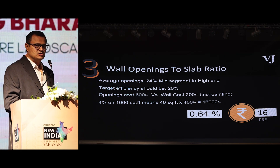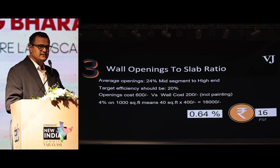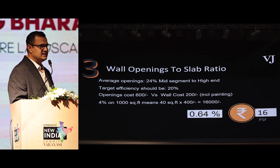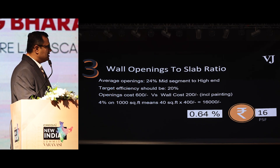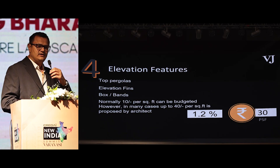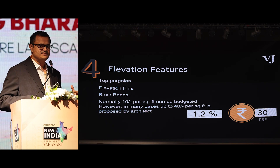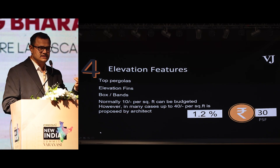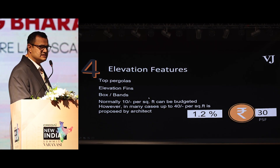Wall openings to slab ratio is also critical because the cost of an opening — which includes aluminum windows, glass, and related items — is quite expensive compared to a normal wall. Without reducing your indoor air quality, this ratio can go up to 24%, but if you can keep your window-to-floor-area ratio at about 20%, it will help you save costs. Elevational features is an area where the architect gets some creative leverage, but it has to be financially viable. We need to have a budget in place, no matter how much that budget is, based on the type of building. This slide shows tentative budgeting you can have in mind for elevational features.